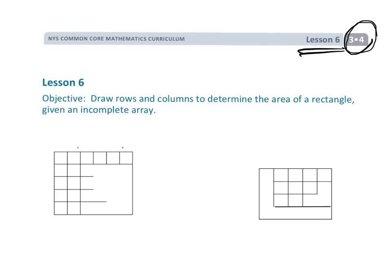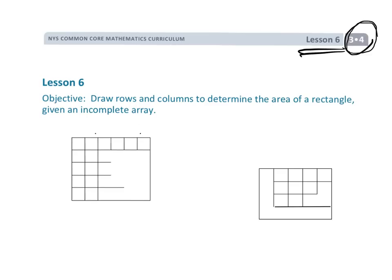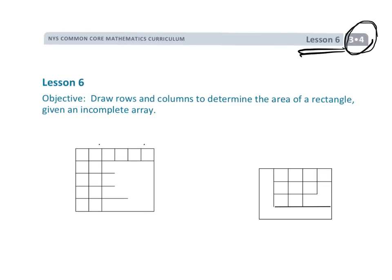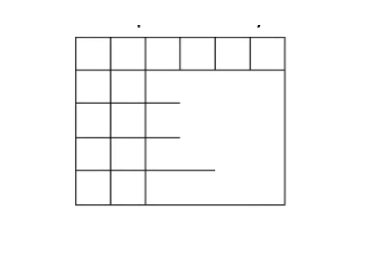We're not quite there yet. We're still really getting to the meaning of what the dimensions, or the side lengths, mean and how that relates to the area of the rectangle. For example, with this rectangle right here, we're going to be given an incomplete array, and then students are going to be asked to finish that array — sometimes explicitly, or at the very least, in their mind's eye.